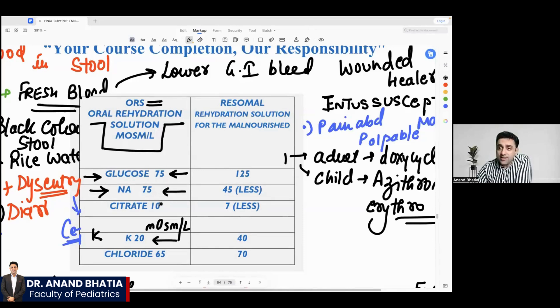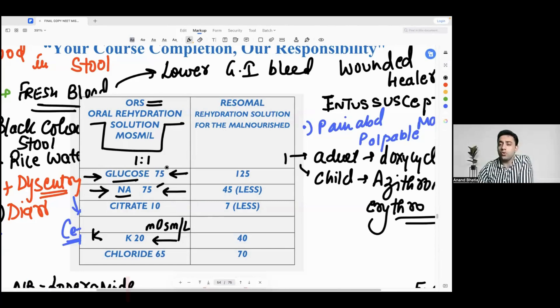What is there in ORS which is in one-to-one composition? The answer is glucose and sodium. Glucose and sodium are in one-to-one composition. So I'll repeat again: sodium is 75, glucose is also 75, potassium is 20, citrate 10, and chloride is 65.